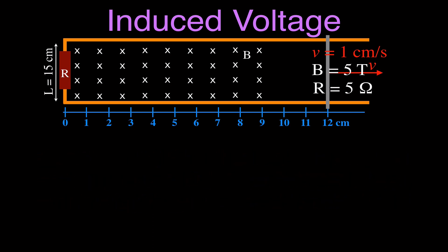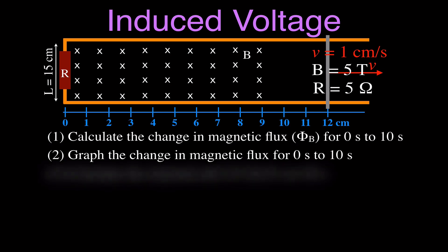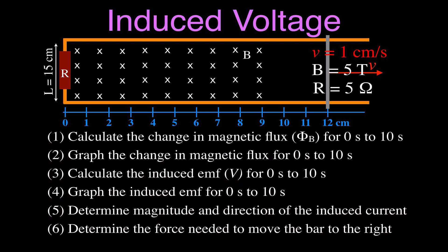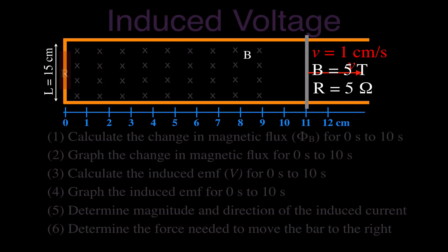In this video, we're going to try to answer the first 4 of these 6 questions. This is part 1. We're going to calculate the change in the magnetic flux from 0 to 10 seconds if we move from 2 centimeters to 12 centimeters at 1 centimeter a second. We're going to graph the change in the magnetic flux, calculate the induced EMF, and then graph the induced EMF. Then in the next video we'll determine the magnitude and direction of the induced current, and the force needed to move the bar.